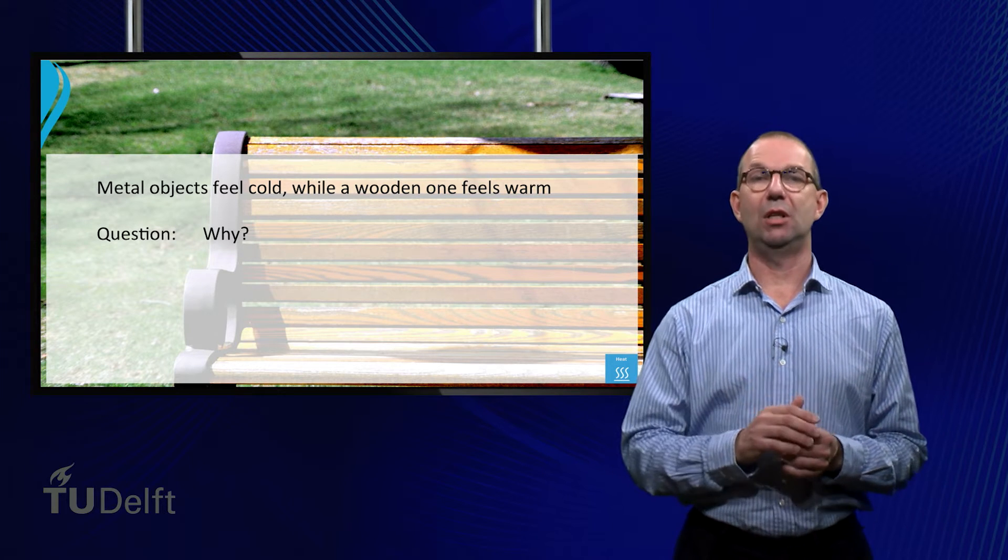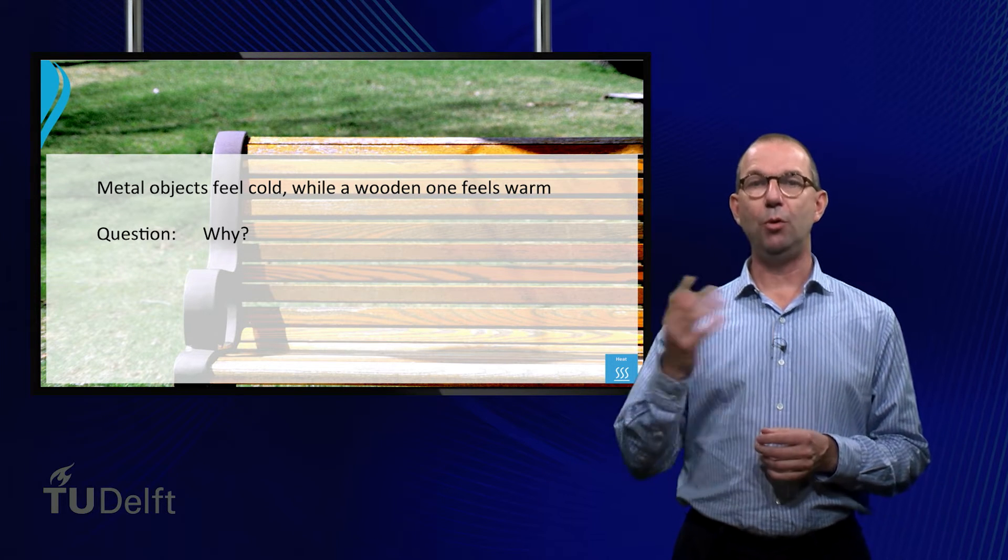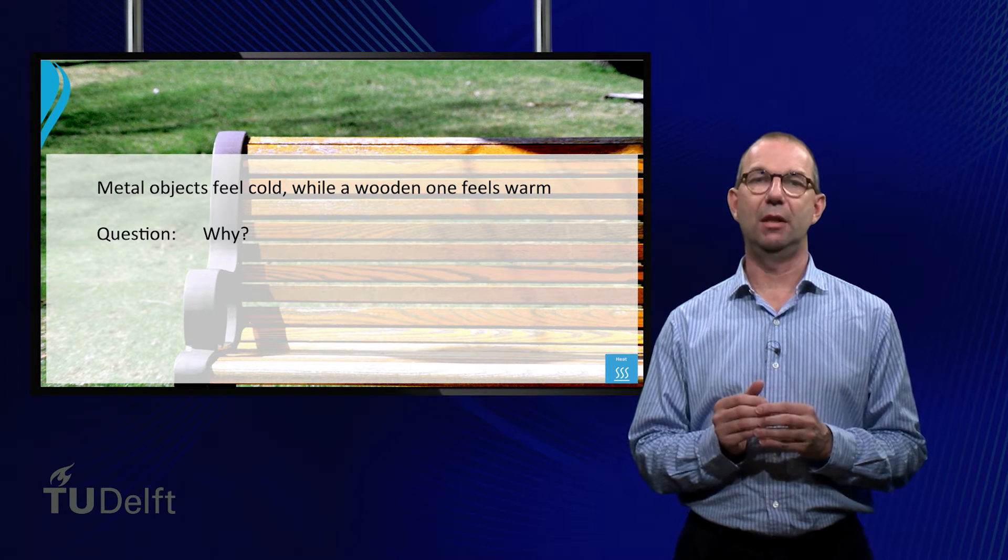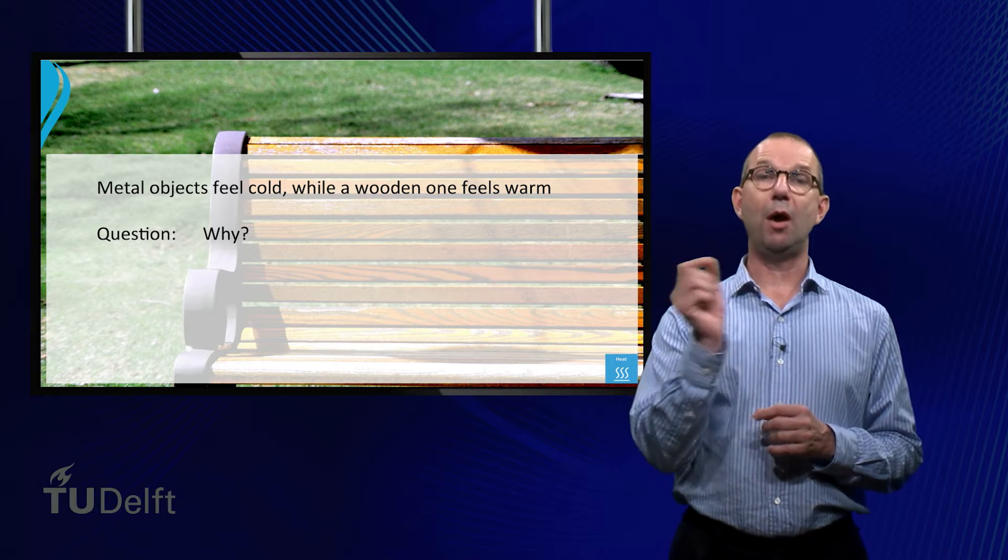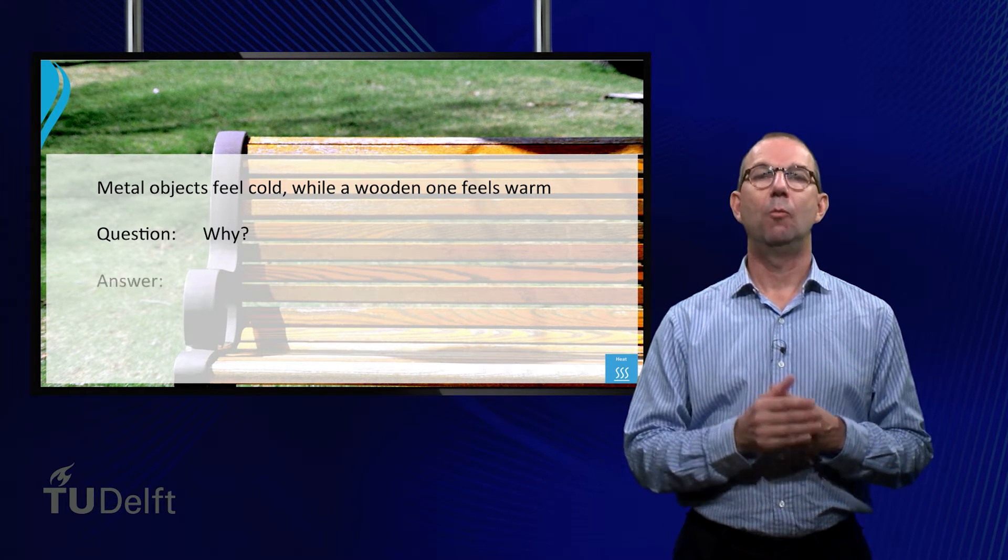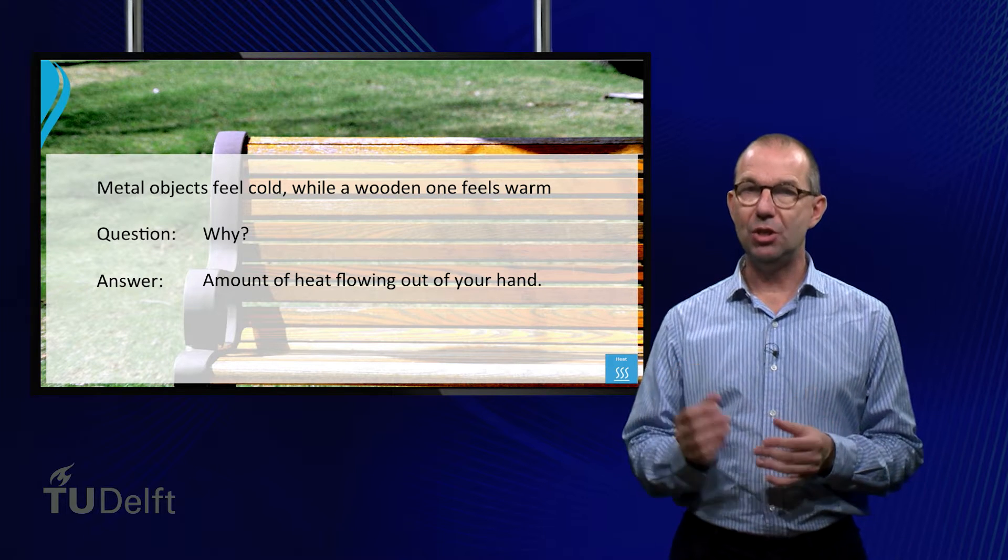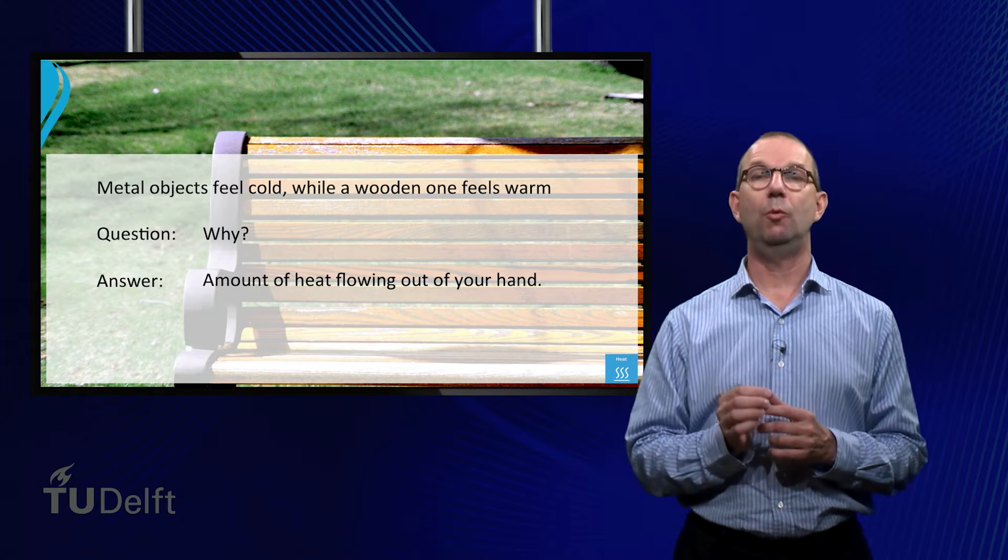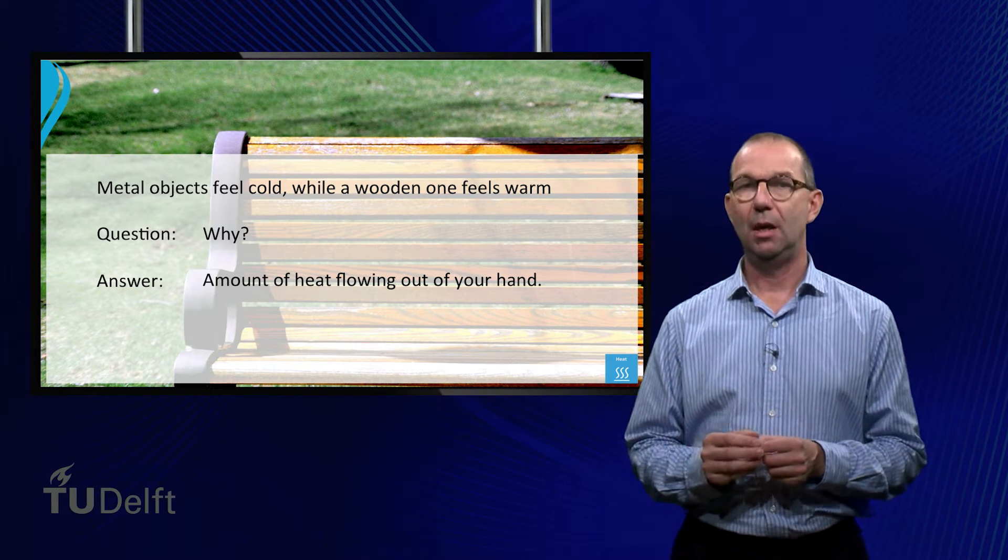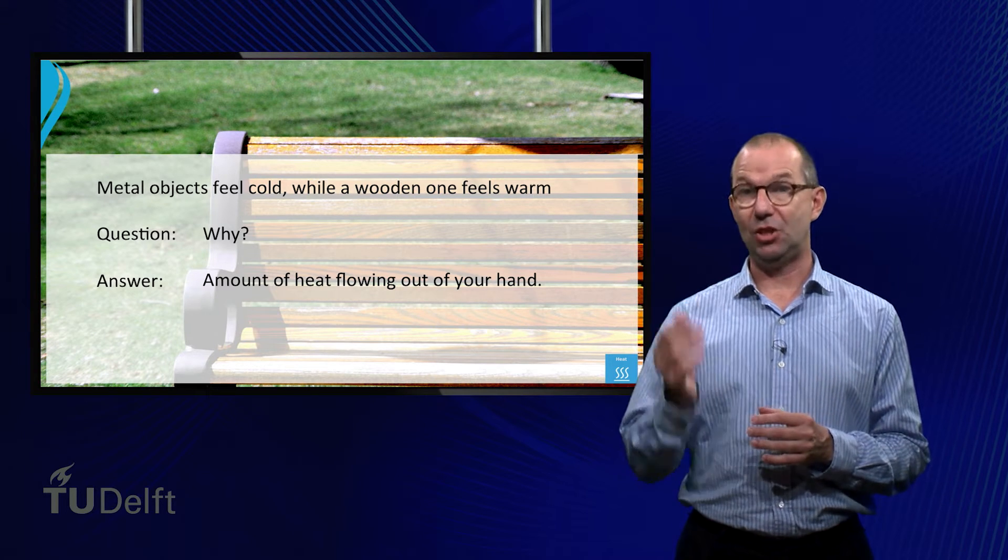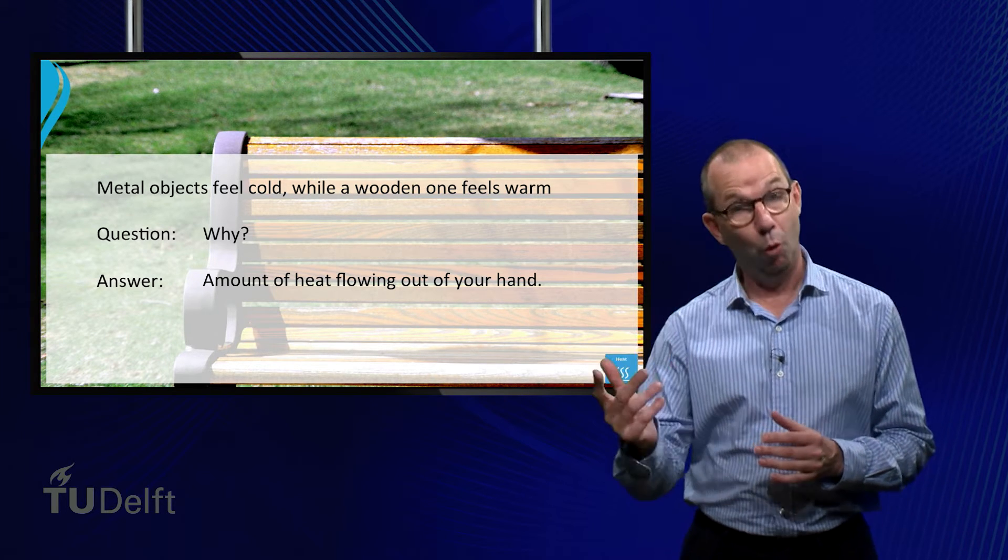The secret lies in heat transfer. Both the wooden and the metal are colder than our skin. Thus there is a driving force for heat out of our hands. What we actually measure is the amount of heat leaving our hands. If that is large, we experience the object as cold. If it is small, the object feels like it is at the temperature of our skin, that is warm.